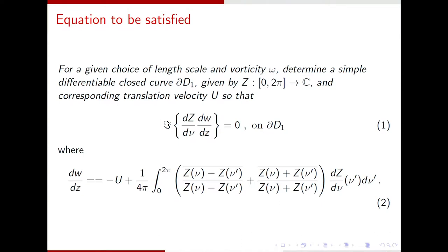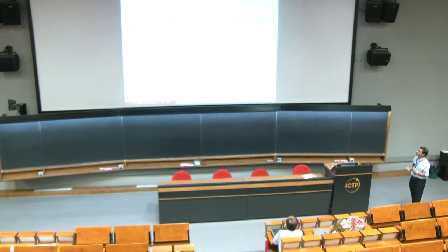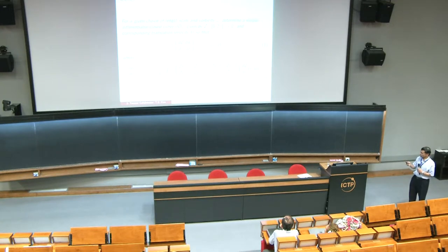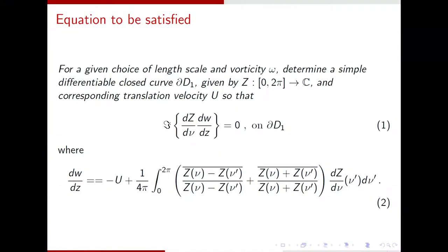But going back to the vortex problem, it's fairly simple. What you have outside the vortex, you have a irrotational flow, irrotational potential flow. So you have a complex velocity potential in two dimensions. So that complex velocity potential is denoted by W. And so the problem is, for a given choice of length scale and vorticity, you can set each of them to one. You want to determine a simple differentiable closed curve, delta D1. And because of the assumed symmetry between the shapes, you only have to determine the shape of the upper half vortex. So delta D1 is the boundary. You have to find that. And you have to find the mapping function z, which maps to the boundary, such that, on the boundary, you have a streamlined condition. That's essentially the streamlined condition, what you see in equation one.